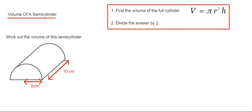So to do it, we're going to follow the two steps in the red box. First, work out the volume of the whole cylinder. So you can do this using the formula V equals pi times R squared times H. Where V is the volume, R is the radius and H is the height or the length of the cylinder. And then once you've done that, you're going to divide the answer by 2 to give you the volume of the semi-cylinder.